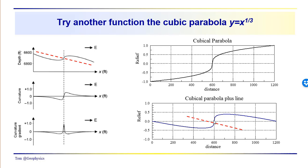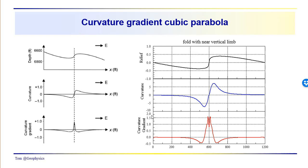Again, this would be the location of the fault — the steeply dipping limb — and the most highly fractured area would be in here. The curvature looks very much like what we have in the example. The curvature gradient, though, rises up but doesn't quite reach a single peak — there's a little bit of a notch in the peak. So we were able to bring the two peaks that we saw in previous examples together almost to a single peak. Whether or not we'd actually see this notch in our data would depend on the midpoint spacing in our data acquisition — we might actually see this rise up to a single peak. But in this particular case we still have some separation between the peaks in the curvature gradient.